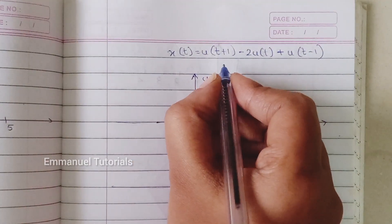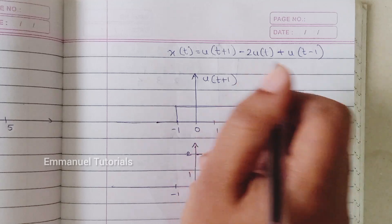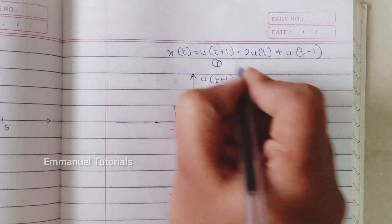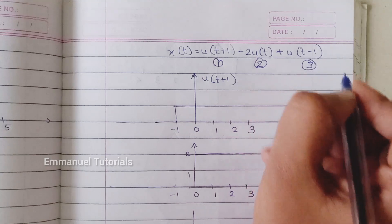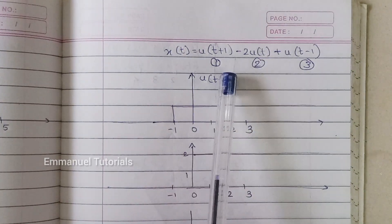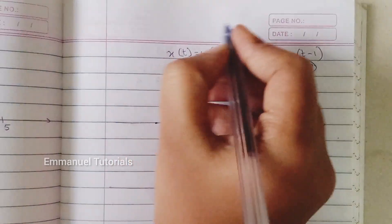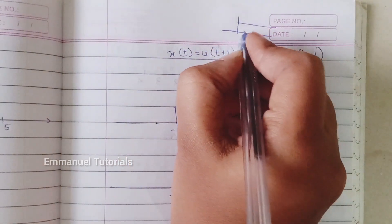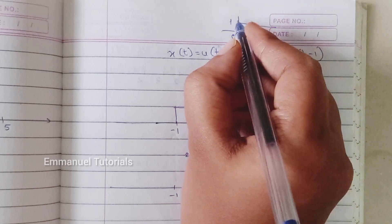This is a unit step example with shifted and scaled versions of the unit step. We'll split the signal into three parts to make it easier to draw. The first part is an advanced version of the unit step — a signal with continuous amplitude of one from zero to infinity along the t-axis.